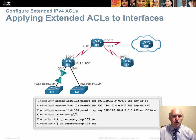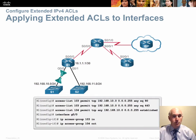These lists are applied to the in and out directions of G0/0 — one list coming in and one going out — filtering traffic from the 192.168.10.0 network. This places the filter as close to the source as possible, which is the most efficient placement for your access list.